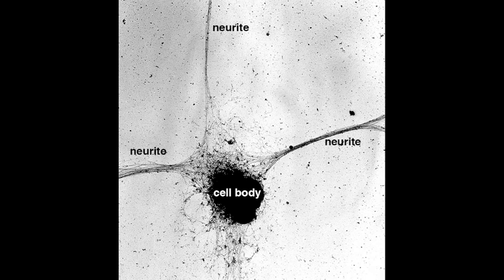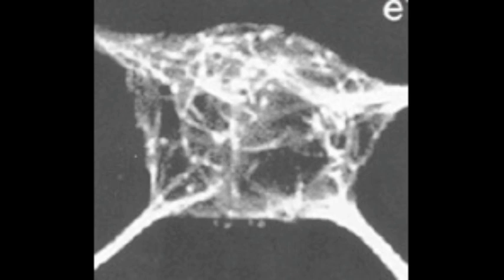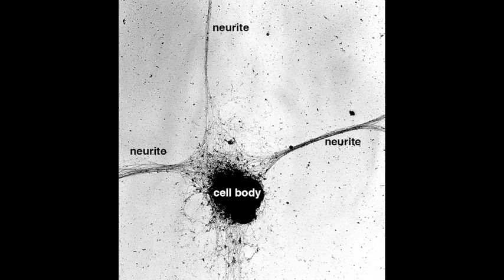Microtubules are long polymers of tubulin protein subunits. Microtubules support and define neuronal shape, encircling the cell body and extending along all neurites. In order for an axon to grow, microtubules in green must be constantly assembled and move down the elongating axon. Microtubules in axons continue to add tubulin subunits in yellow as an axon grows.